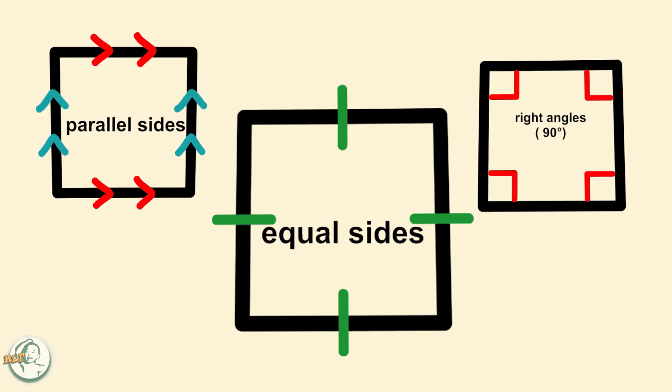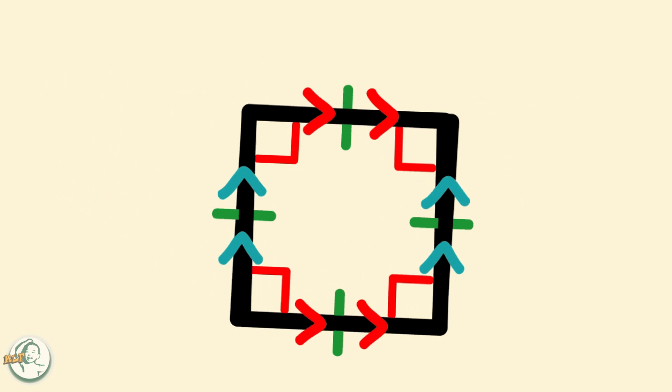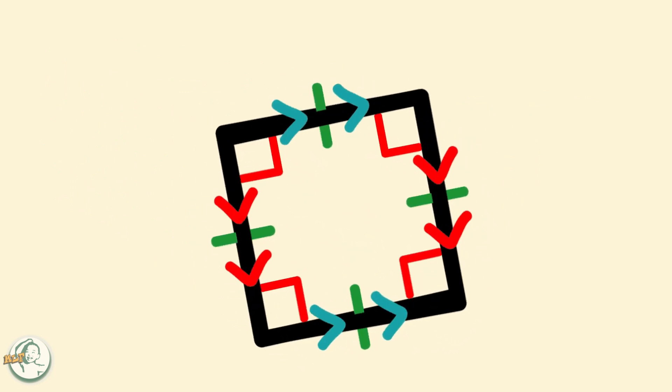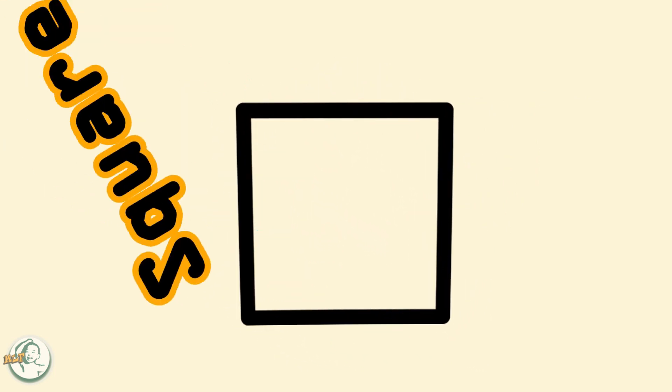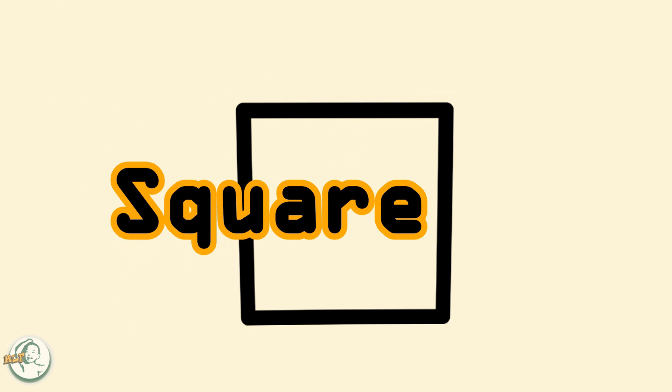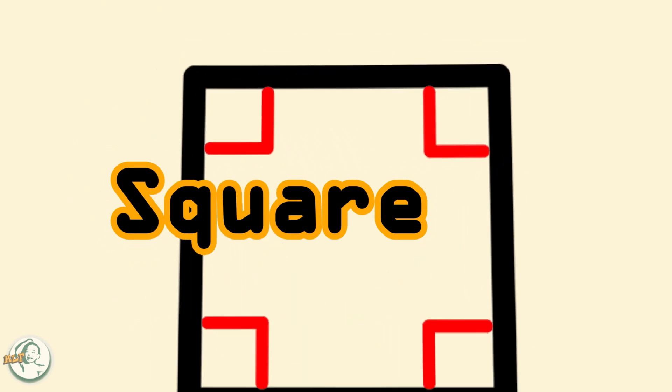Finally, a square possesses rotational symmetry of order 4, which means it can be rotated by multiples of 90 degrees and still look the same.